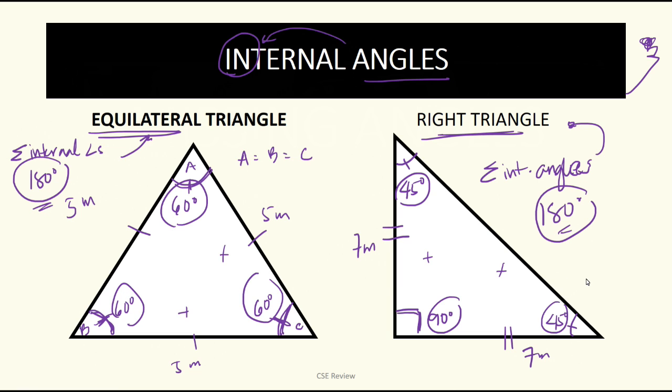Ang sum din ng internal angles ng right triangle ay 90 plus 45 plus 45 or 180 degrees. Did you notice that? Pareho sila, 180 at 180. Ngayon, anong ibig sabihin nun?